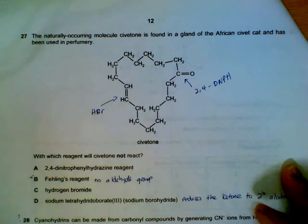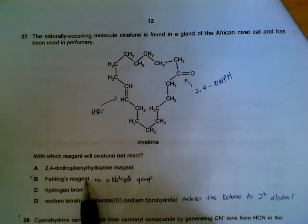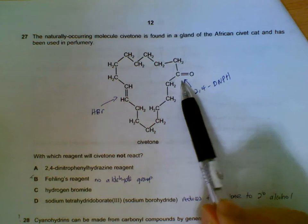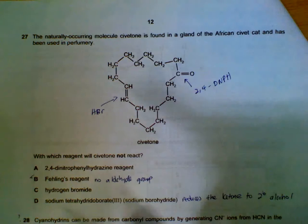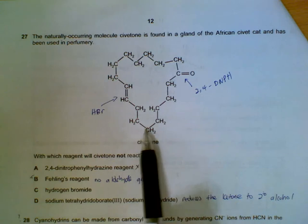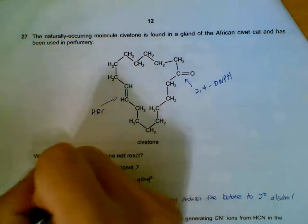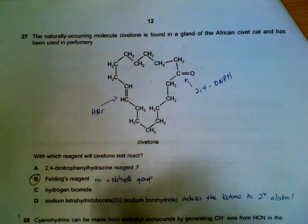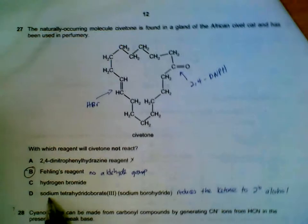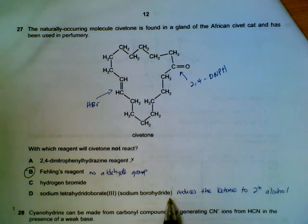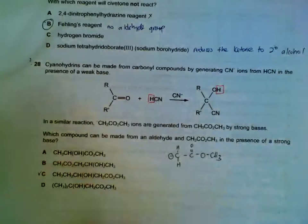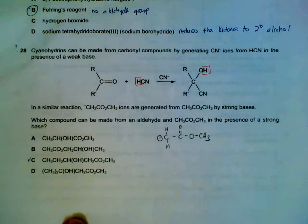Number 27: which one will not react with the molecule? 2,4-DNPH will actually react with this ketone group to give a yellow precipitate, so that will react. Tollens reagent - there's no aldehyde groups in this molecule, so there will be no reaction with Tollens reagent. Hydrogen bromide will be reacting with your C=C double bond. Sodium boron hydride is a reducing agent; it will reduce your ketone to your secondary alcohol.